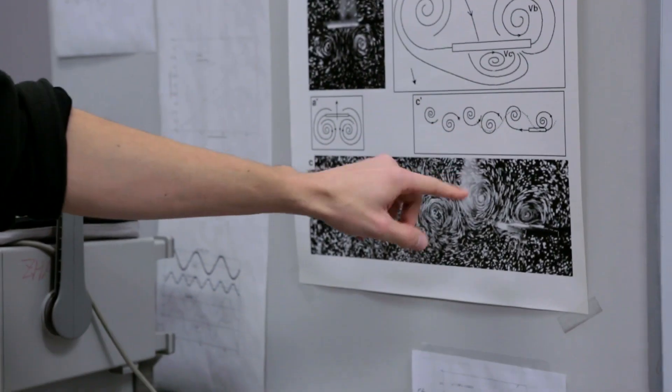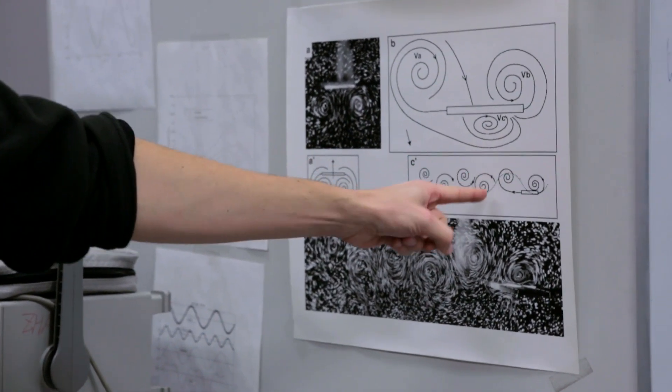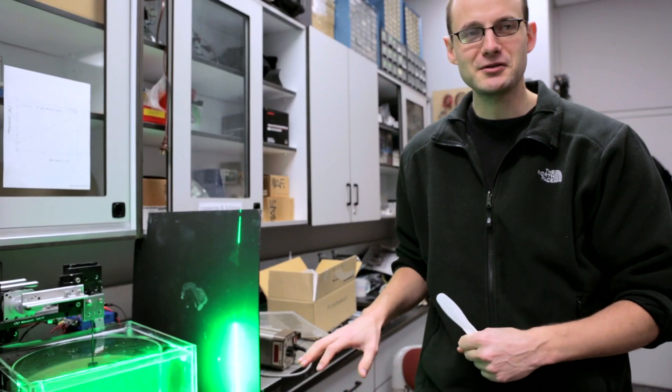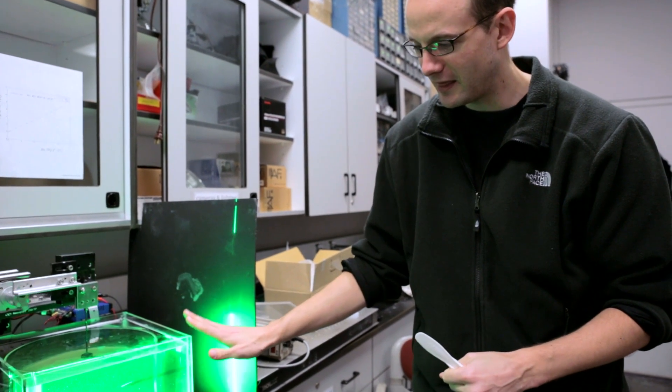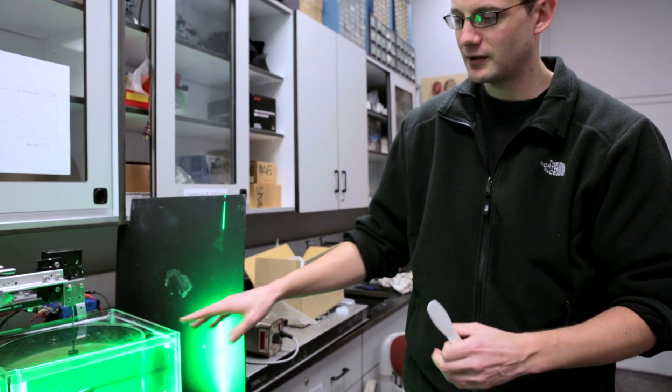And each swirl spins opposite to its neighbor and they're kind of staggered in this array. This is what we don't completely understand. Somehow that basic feature leads to the lift generated or the thrust generated.